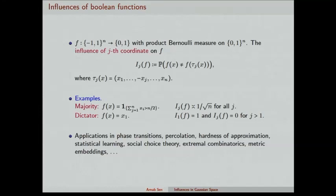Examples — these are the two most standard examples. The first example is majority, where all the variables behave in the same way, and the influence of the function is 1 over square root n. Then you have dictator, which depends only on one coordinate, so all the other coordinates have influence 0. Only the coordinate on which it depends — in this case it's coordinate 1 — has full influence, that is influence equal to 1.